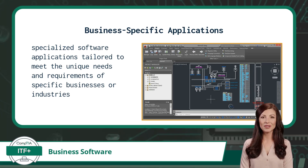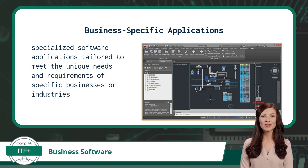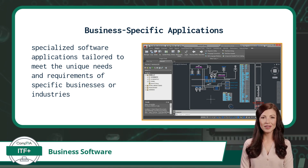Now let's talk about business-specific applications. These are specialized software applications tailored to meet the unique needs and requirements of specific businesses or industries. Unlike generic software, business-specific applications are designed to address industry-specific challenges and processes, providing targeted solutions and functionalities. These applications aim to enhance efficiency, productivity, and decision-making within a particular business domain by focusing on the specific tasks and workflows relevant to that industry.